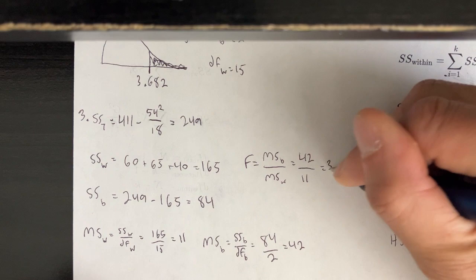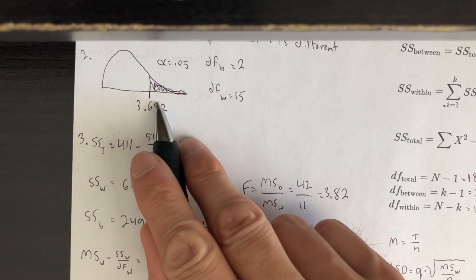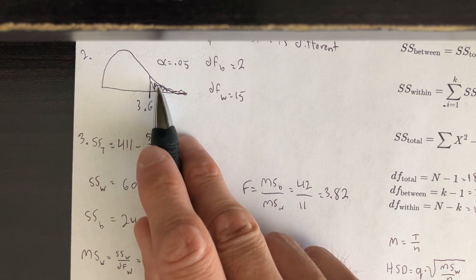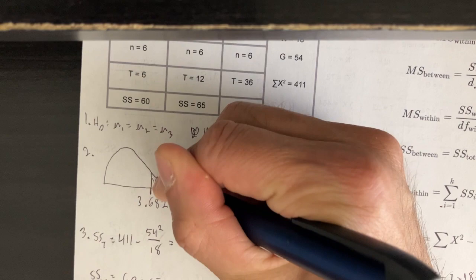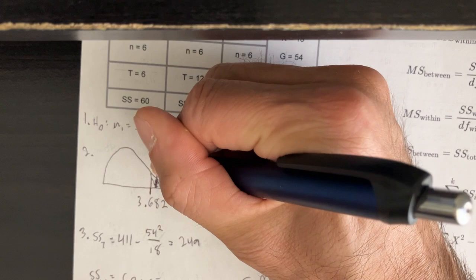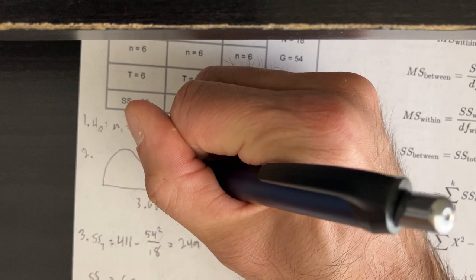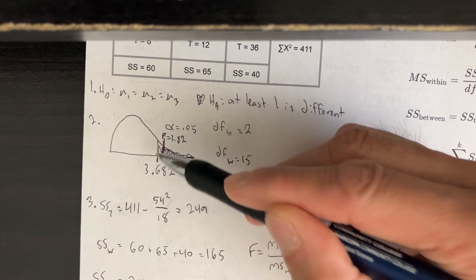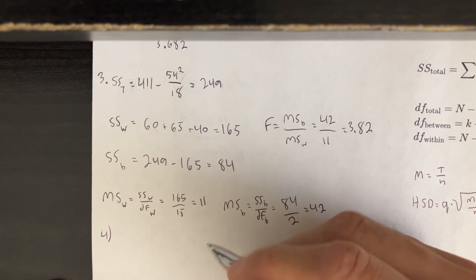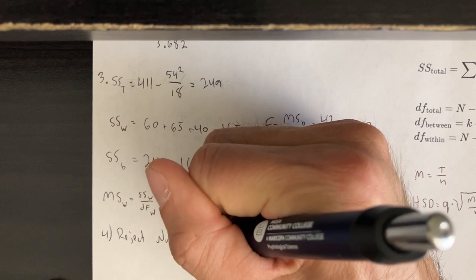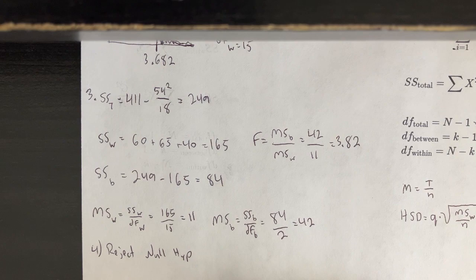We compare this to our rejection region. The F value of 3.82 is greater than the cutoff of 3.682, so it falls in the shaded rejection region — just barely, but it counts. Therefore, we reject the null hypothesis and conclude that there is a significant difference with at least one of the means.